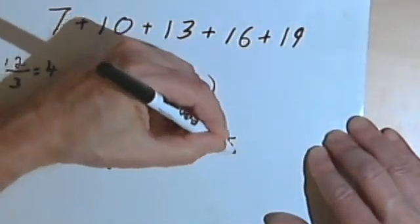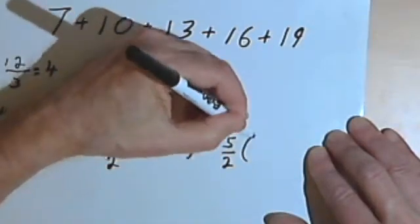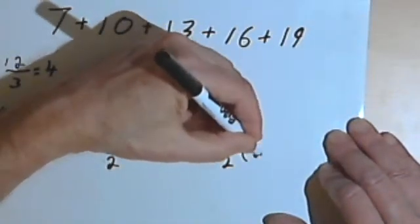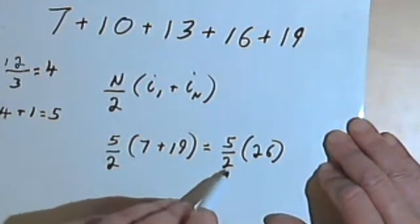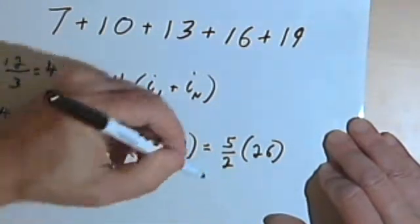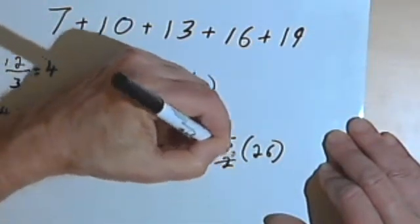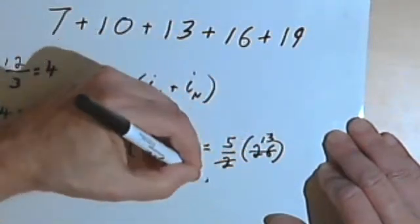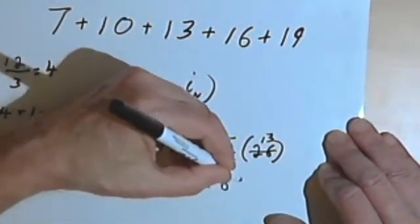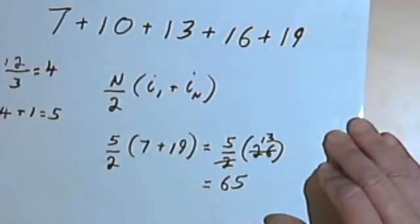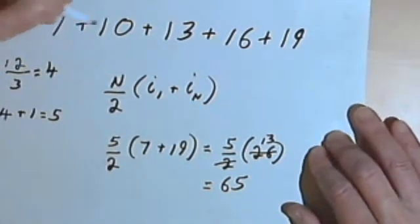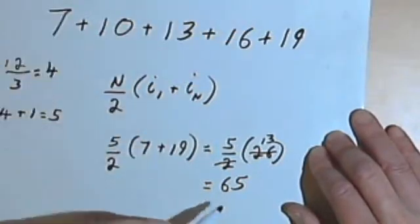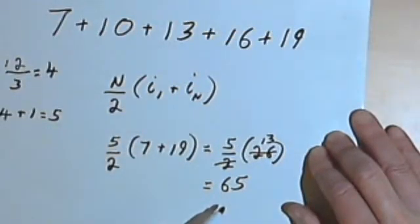So that's going to be 5 halves times 7 plus 19 is 26. I think what I want to do is divide 2 into 26. So the 26 will now become a 13. I've got 5 times 13, which is 65. So the sum of these 5 numbers, 7, 10, 13, 16, and 19, is going to be 65.